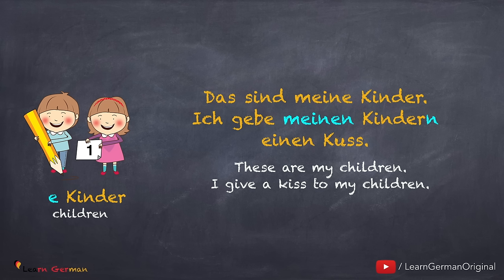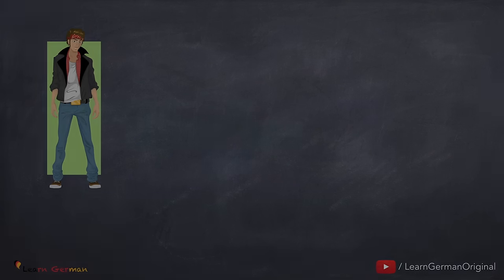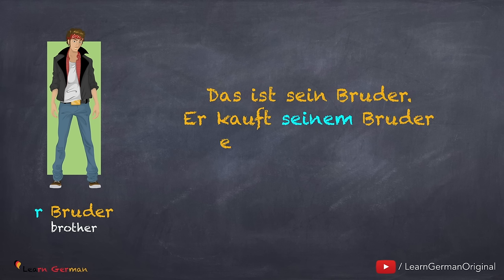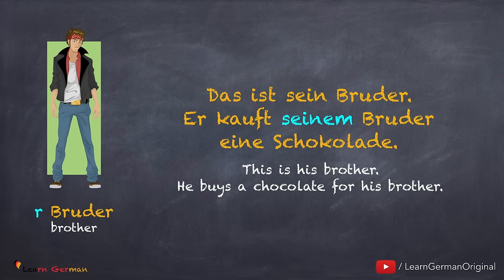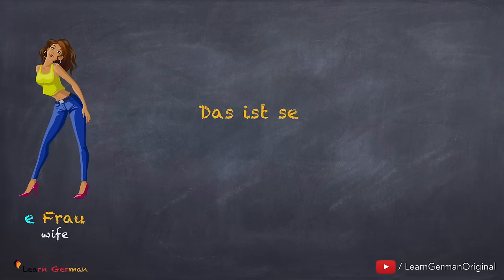These rules for masculine, feminine, neutral, and plural apply to all other possessive pronouns. Let's do a few more examples. Das ist Martin. Das ist sein Bruder. Er kauft seinem Bruder eine Schokolade. Since Martin is masculine, we use the possessive pronoun 'sein', and 'sein' changes to 'seinem' in dative because the article for 'Bruder' is 'der'.